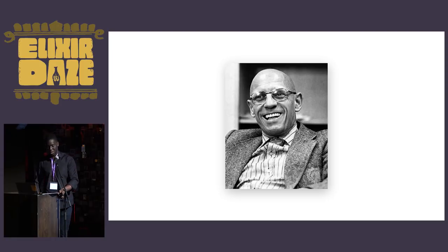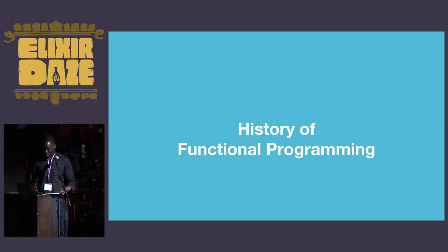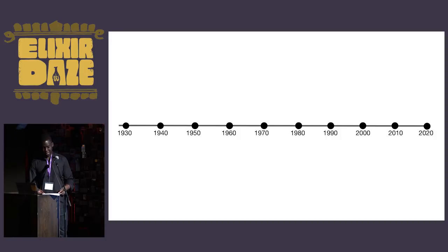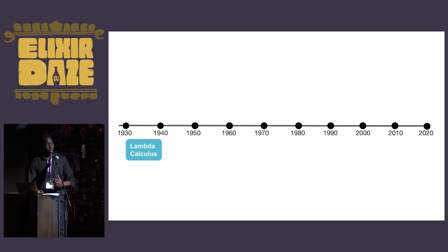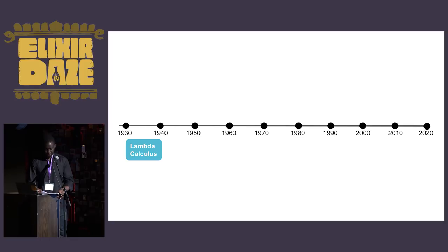With that in mind, let's turn to a history of functional programming from the 1930s up until this point. The early period of functional programming begins in the early 1930s and lasts until the late 1960s. Lambda calculus emerges in the 1930s, led by Alonzo Church's work. It's a system of mathematical logic for describing computation based on functions using variable binding and substitution — a model of computation that can be used to build a Turing machine. It becomes a common ancestor for all functional programming languages to this date.